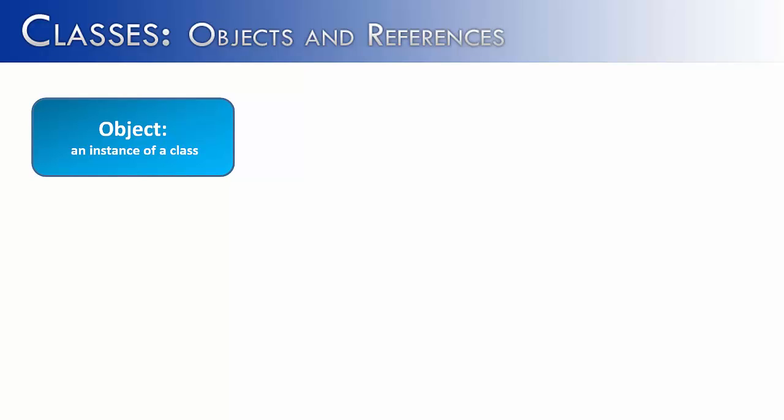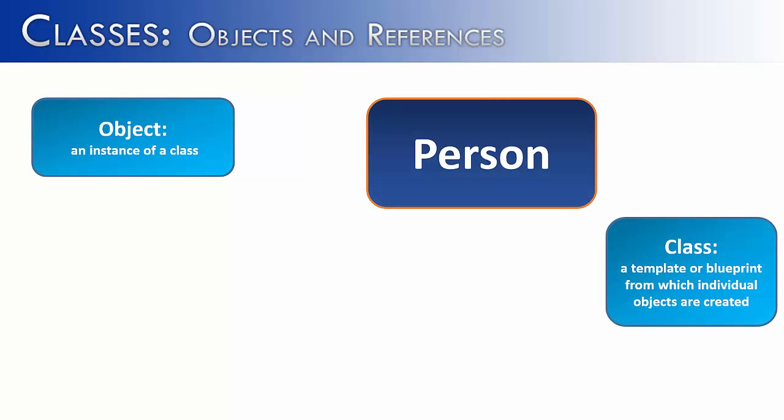So the simplest definition of an object is an instance of a class. And if we're going to say an instance of a class, we need to understand what a class is. A class is a template or a blueprint from which individual objects are created.